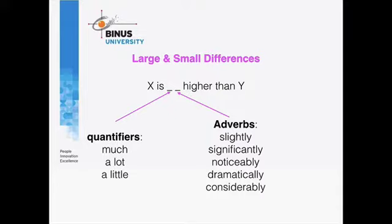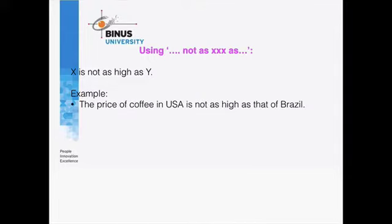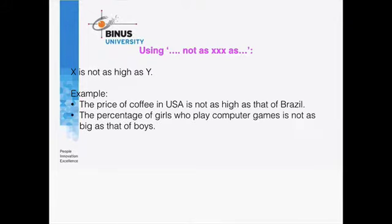That's the first structure. There is another structure as well, which uses 'as'. The example would be: X is not as high as Y. For Task 1 type sentences you might write: 'The price of coffee in the USA is not as high as that of Brazil,' or 'The percentage of girls who play computer games is not as big as that of boys.' Your adjective will be quite simple — high, big, small. Notice also that you can use 'that of' in exactly the same way with this structure to avoid unnecessary repetition.